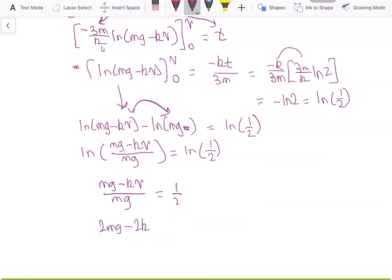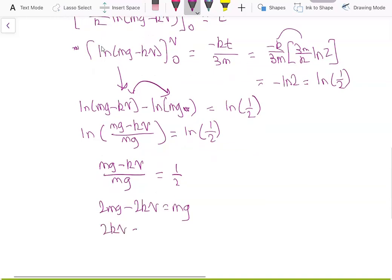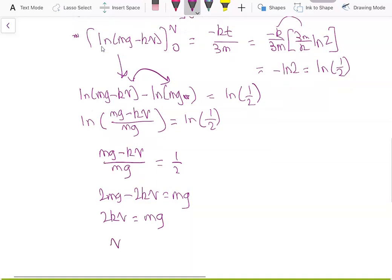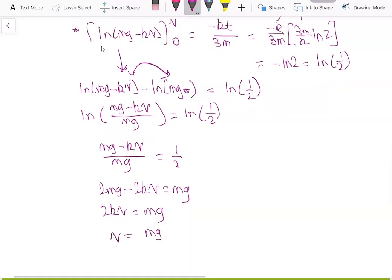And now we can rearrange it. And 2kv equals mg, so v is going to equal mg over 2k.